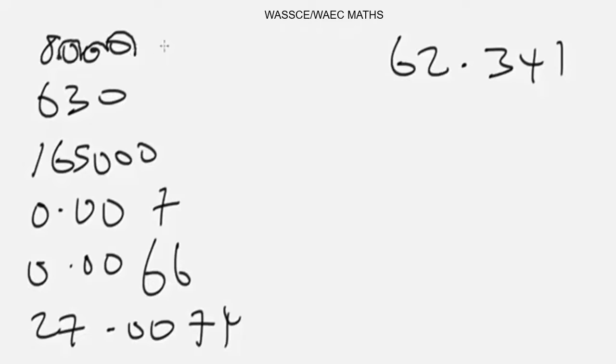Now note that we didn't do something like this: we didn't write it like 8.000 times 10 to the power 3. If you do it like this, it's somewhat wrong.